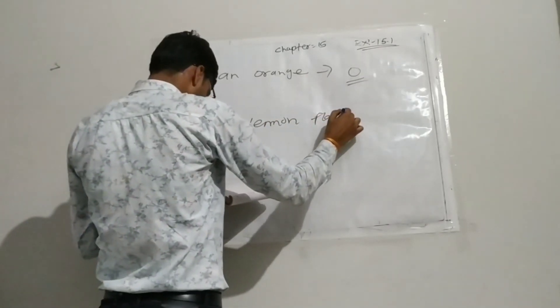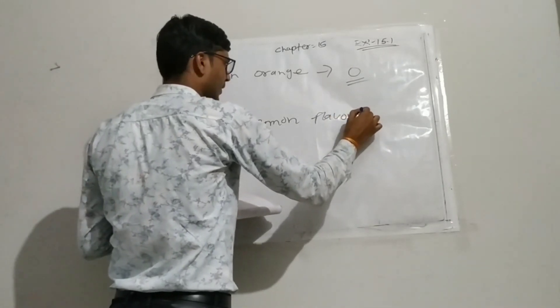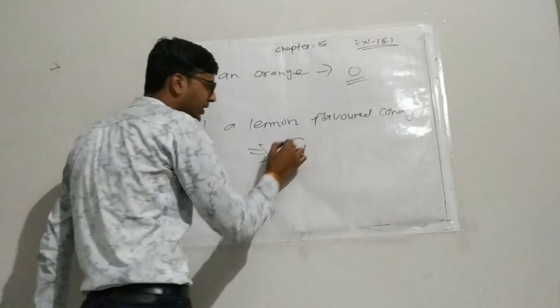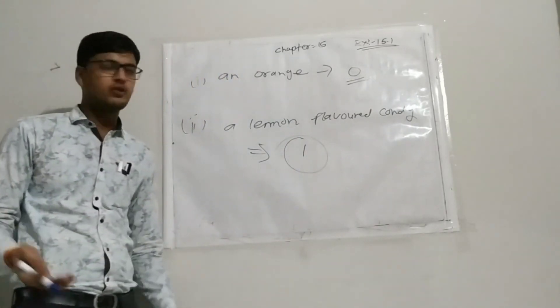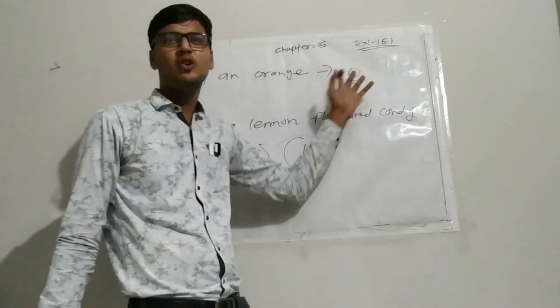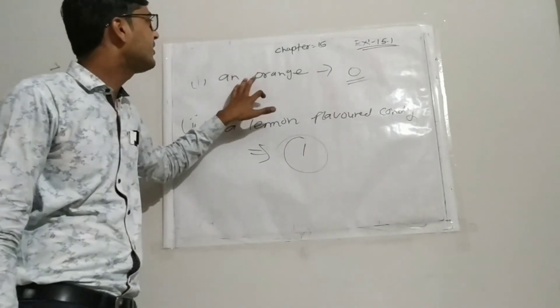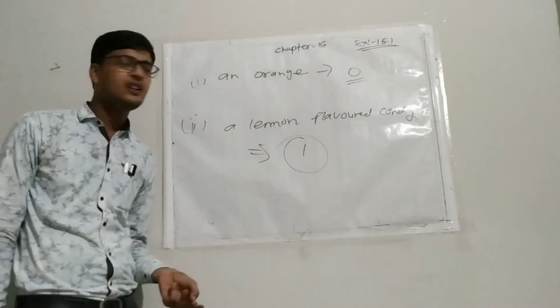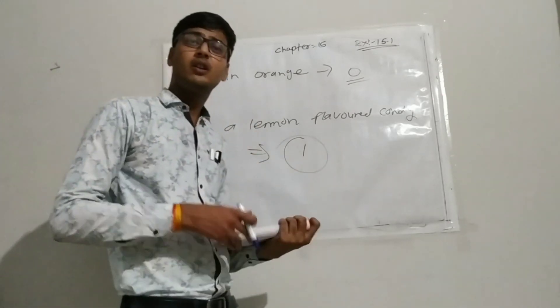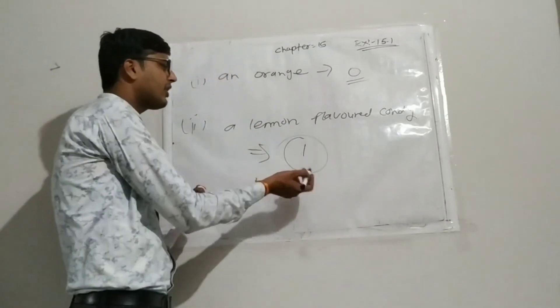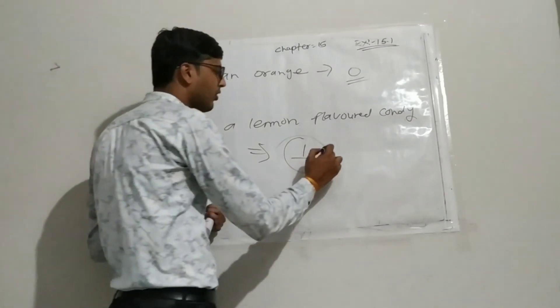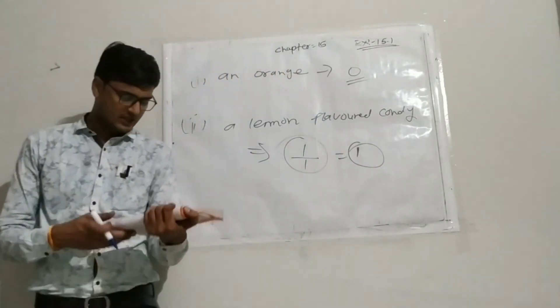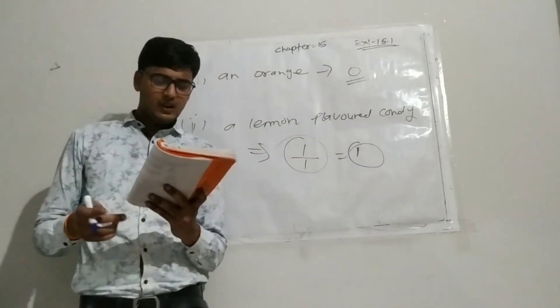And second is a lemon flavor candy. So lemon flavor, all candies are there, so its probability is one. The possibility is certain. Orange will be zero because orange flavor candy is not in this bag. It doesn't contain. But all candies are lemon flavor, so number of favorable outcomes upon total number of outcomes, both are the same. It means your answer is one.